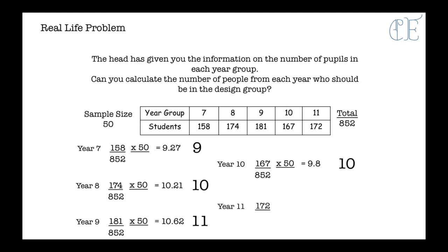And in year 11, 172 out of 852. Times 50 gives us 10.09, which is again 10 students. So calculate the number of people from each year who should be in the design group, and there you have it.